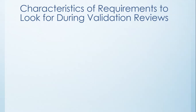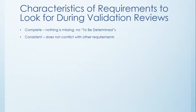When doing a validation of requirements, here are 10 characteristics to look for during your validation reviews. The first is that each requirement is complete — nothing is missing in the statement of the requirement. Sometimes people put in a 'to be determined' when they haven't fleshed it out enough. The next is that each requirement is consistent, meaning it doesn't conflict with another one in the list of requirements.